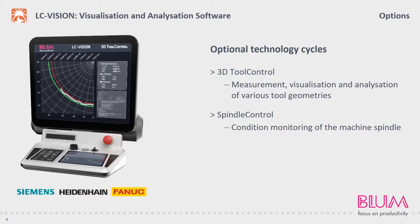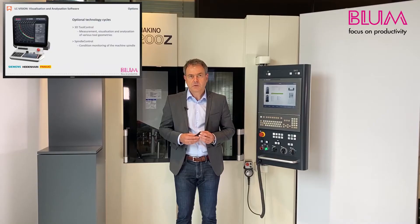At present, two technology cycles are available. With the help of 3D tool control, it is possible to measure, visualize and evaluate the most diverse tool geometries. Spindle control is used to monitor the condition of the machine spindle. These options can easily be activated from the license manager using an activation code. I should mention that the procedure for activating optional technology cycles does not require a separate service call.